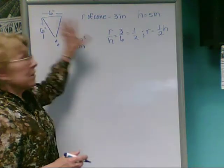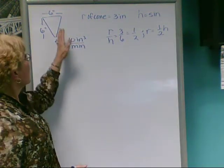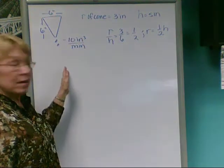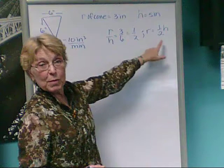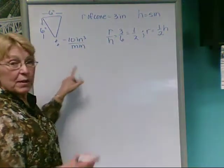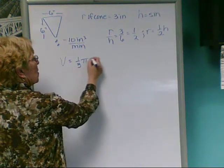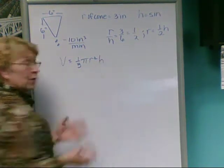And that works for this cone because of the relationships of its radius and height. So I can simplify my formula for volume of the cone, which is 1 third pi r squared h for all cones.